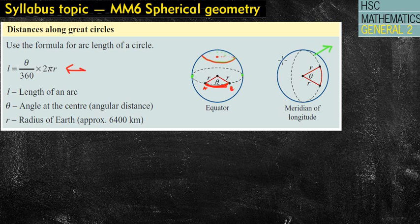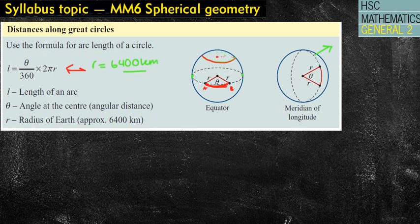We'll be using the arc length formula and applying it. The formula is θ/360 × 2πr. The radius will always be given as 6,400 kilometres unless otherwise stated — we always take it as 6,400 km. Which means for these questions, the only difference will be finding our theta, and that can get a little bit difficult sometimes.